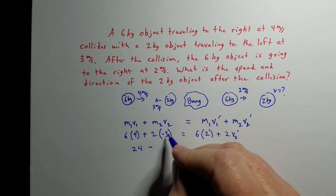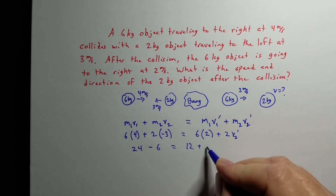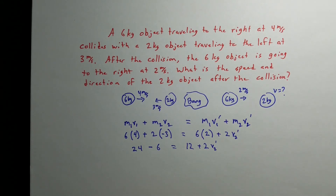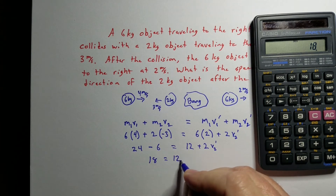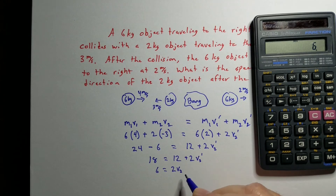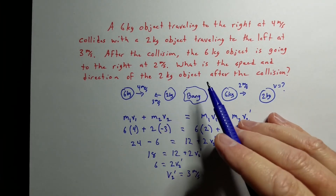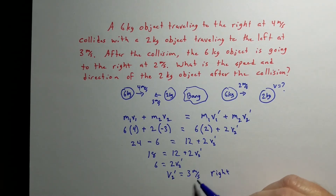Working out the math: 6×4 = 24, minus 6 equals 18 on the left side; on the right side we have 12 + 2v₂'. Subtracting 12 from both sides gives 6 = 2v₂', so v₂' = 3 m/s. Since our answer came out positive, we know it's moving to the right. If the answer had come out negative, it would be traveling to the left.